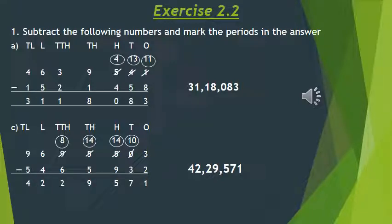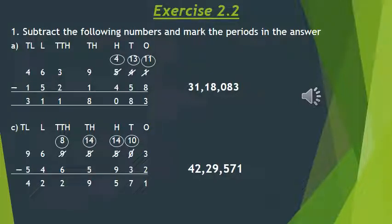14 minus 9 is 5. Then we have borrowed from the thousands place. After further borrowing and subtracting: 8 minus 6 is 2, then 6 minus 4 is 2, then 9 minus 5 is 4. So the answer is 42,29,571. We have marked the commas and periods accordingly. That completes Question 1.